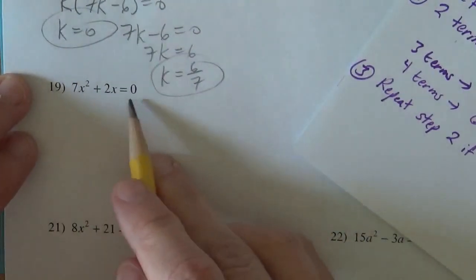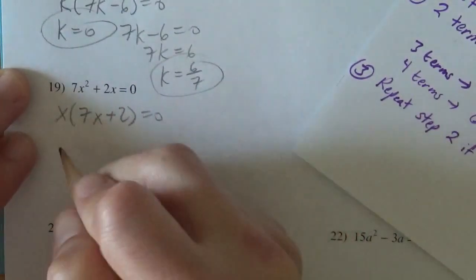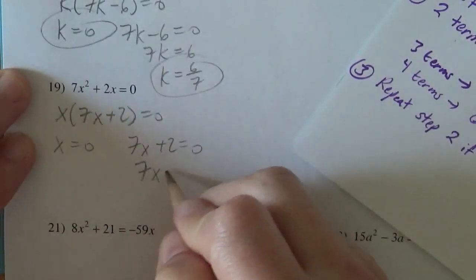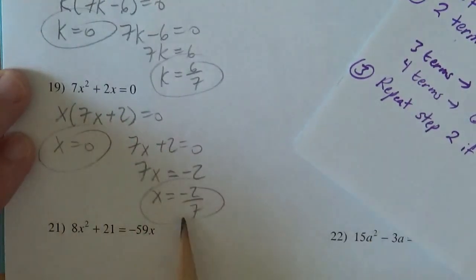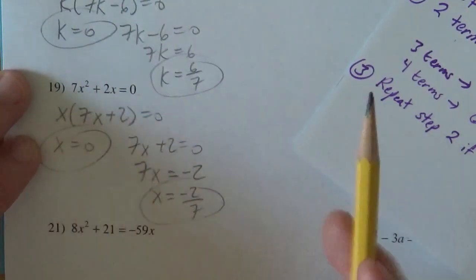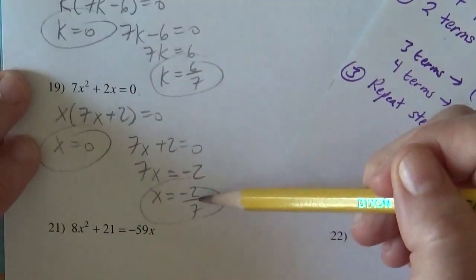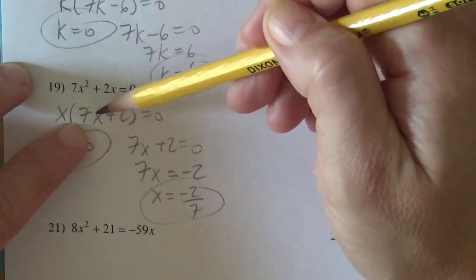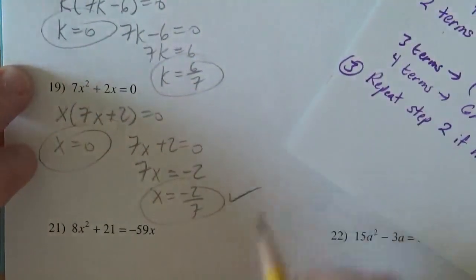Same idea on this one. It's already set equal to zero. So x times seven x plus two equals zero. So either the x equals zero or the seven x plus two equals zero. So seven x equals negative two. So x equals negative two sevenths. You can plug them back in. Certainly zero works. Zero plus zero equals zero. And if you took the time to put in negative two sevenths, you could do it. Here you can see that seven times negative two sevenths would be negative two, and negative two plus two would give you zero. So zero times negative two sevenths would give you zero. It works.